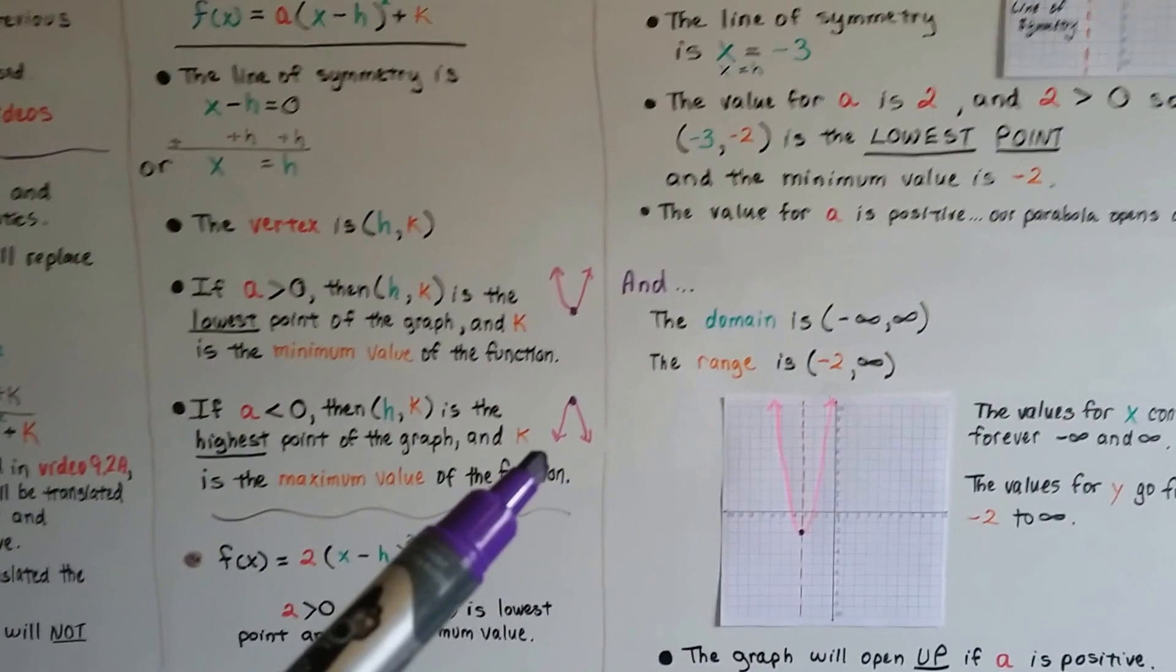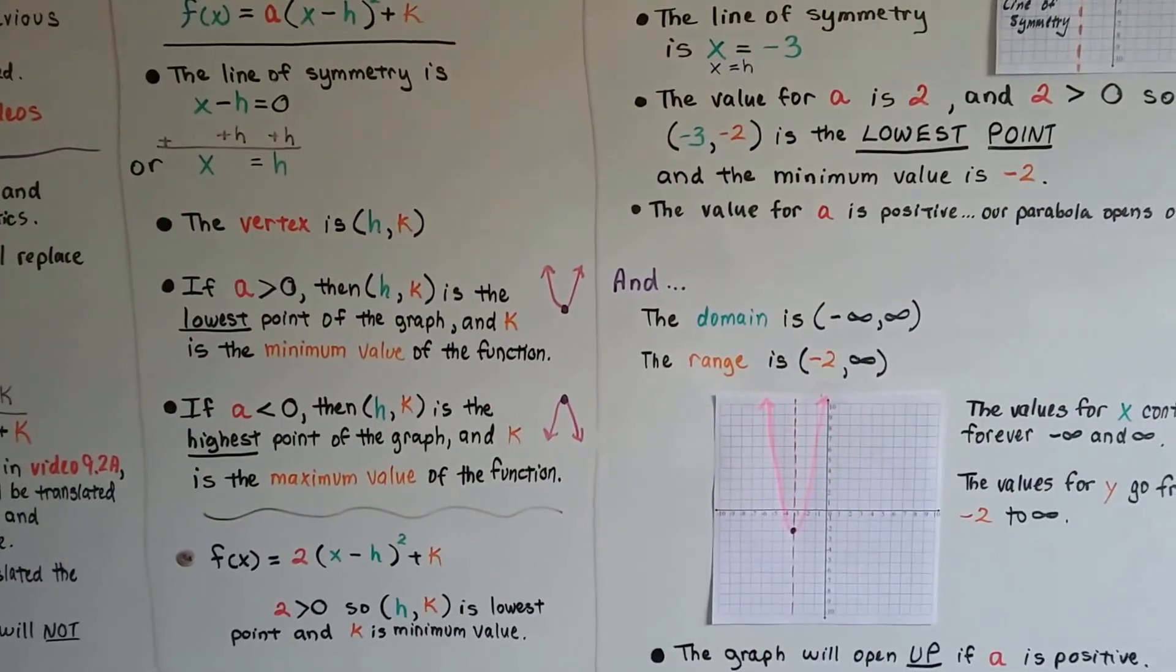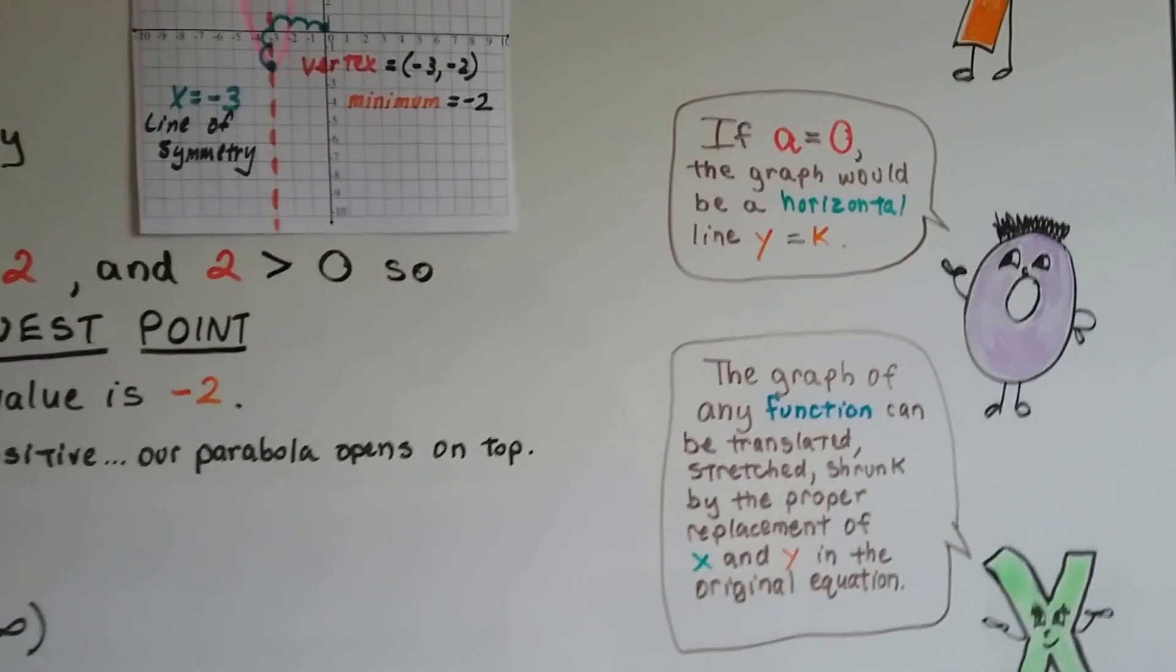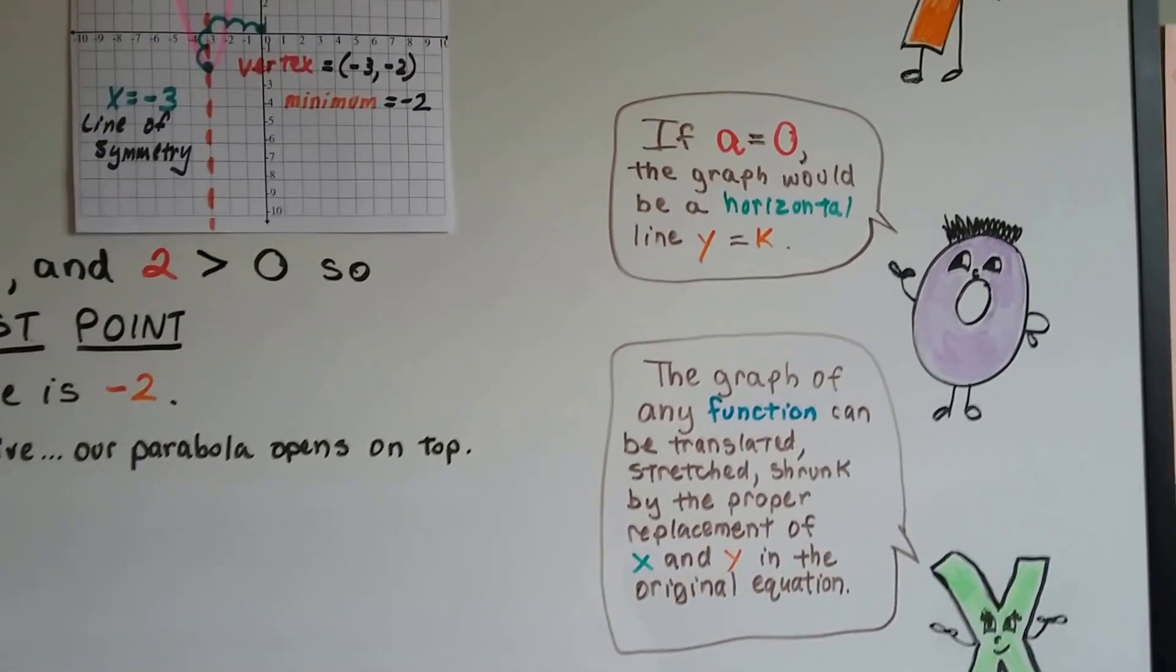If a is less than zero, that's our highest point and our maximum value. If a is equal to zero, the graph would be a horizontal line. It would be y = k.